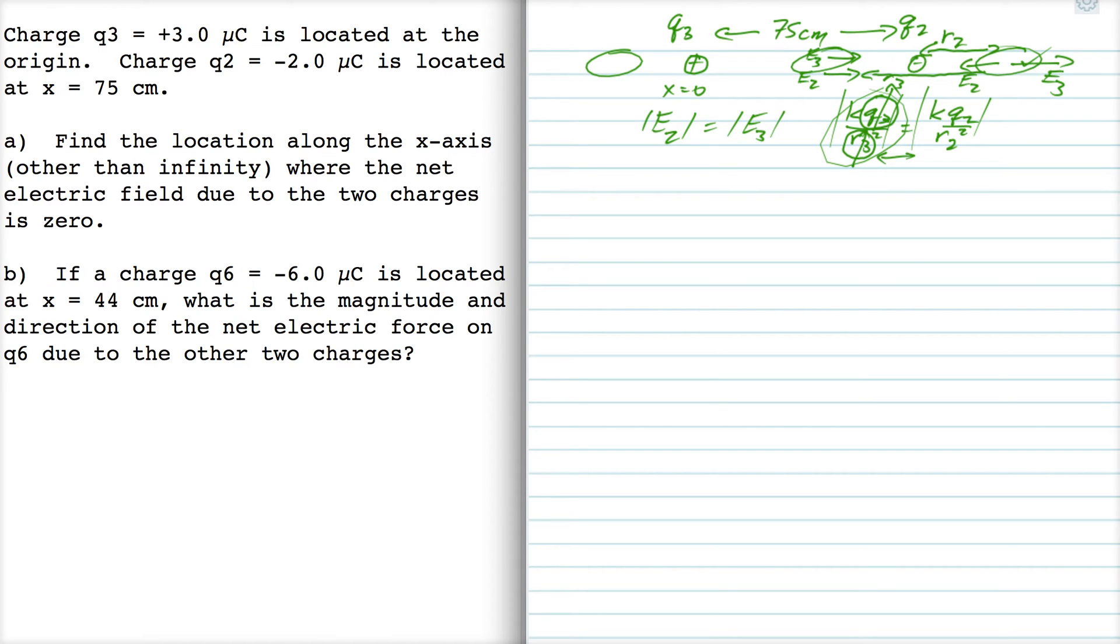So I'm going to set that up. I'm going to write k times 3 over—now r3, the distance to q3 is just x, that's the x component, because remember q3 is at the origin. And charge 2 would look like this: x minus .75 squared. For example, if r3 is 2, then we'd have to subtract .75 from that and get 1.25. Anyway, so you notice that I've only listed the magnitudes of the two charges here. I put plus 3 and plus 2 here, because we're just trying to make the magnitudes of these two numbers equal.